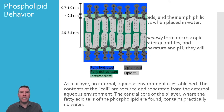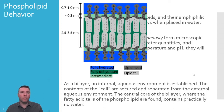Because the bilayer establishes a boundary between an internal and external environment, the cell's contents as well as the environmental conditions within the cell are kept separate from the external environment. This model, showing a portion of a phospholipid bilayer, illustrates regions of the bilayer that would be fully hydrated, partially hydrated, and fully dehydrated, relative to each part of the bilayer and the phospholipids that comprise it.